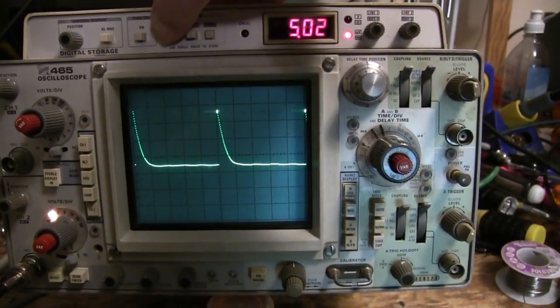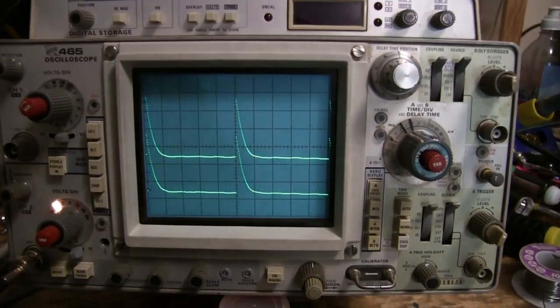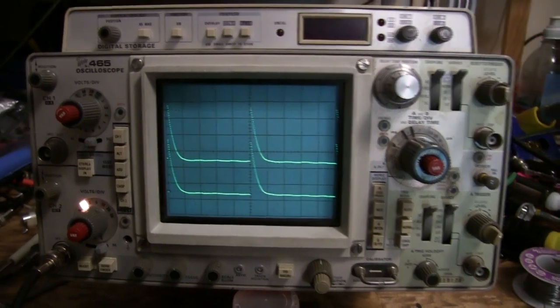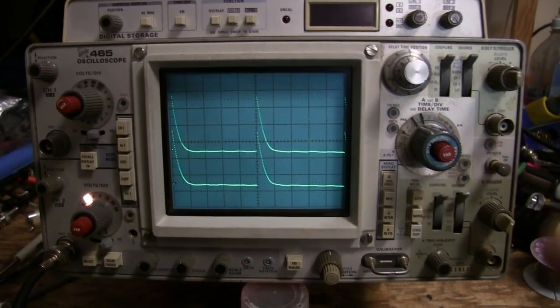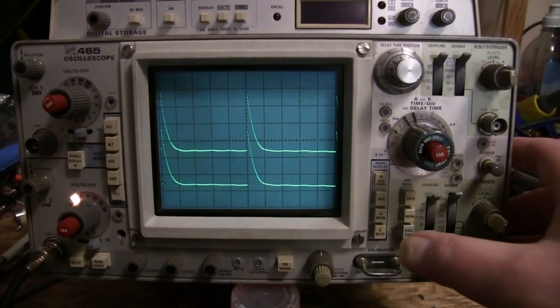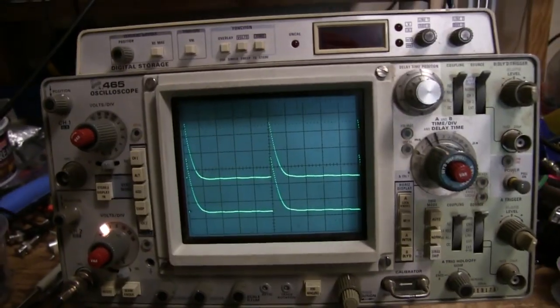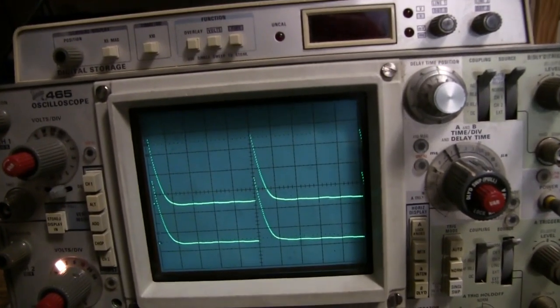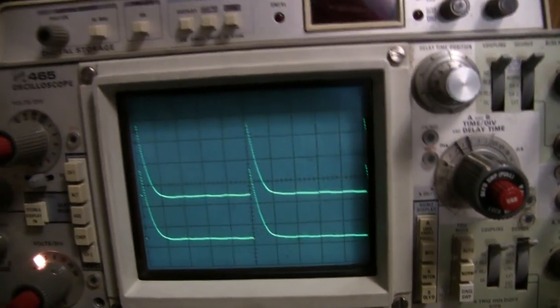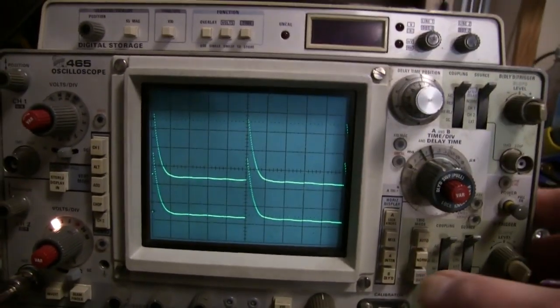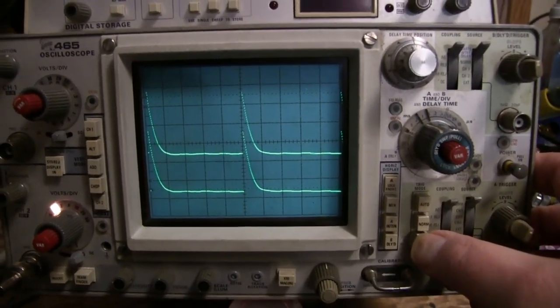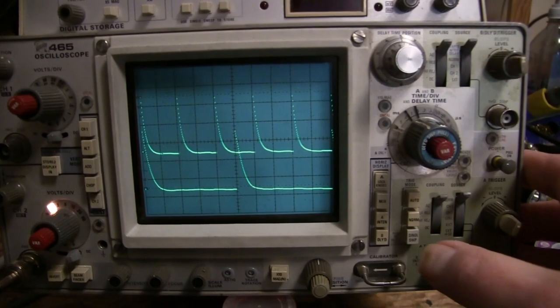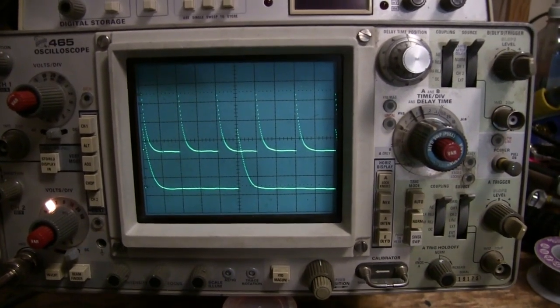One of the other modes that it has is called the overlay mode, which is sort of analogous to the save reference mode that a lot of digital scopes have. Each time you do an acquisition when you're in overlay mode, the old acquisition goes into the overlay and the new acquisition is displayed.